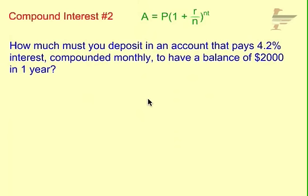So this problem, we're going to figure out how much should we put in because in the end we want to have $2,000. So compounded is our key word that tells us to use this equation up here.